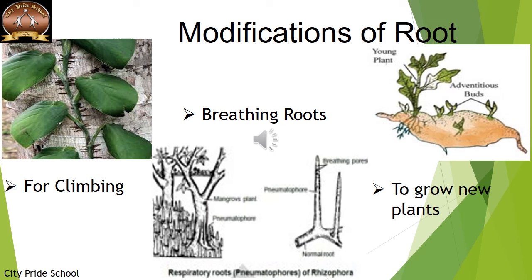There are also breathing roots present in mangrove plants. Mangrove areas have very marshy soil, so the roots underground are not able to breathe. The normal roots give out vertical branches with pores on them, which help the plant to breathe. These branches come above the marshy area so the plant can take in oxygen — they are termed breathing roots. Some roots that store food can also have buds growing on them, and these buds can give rise to new plants.